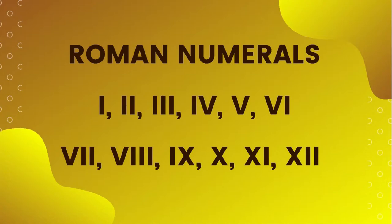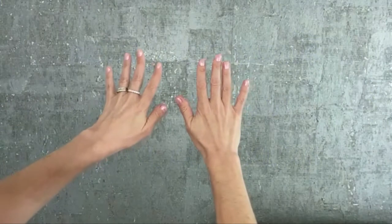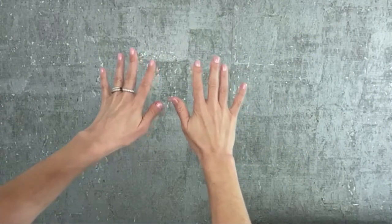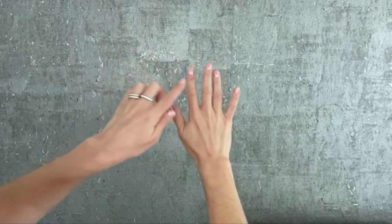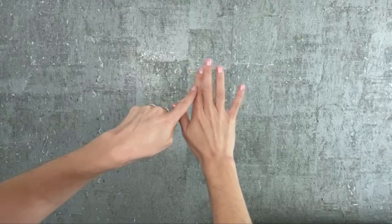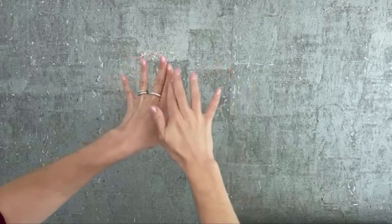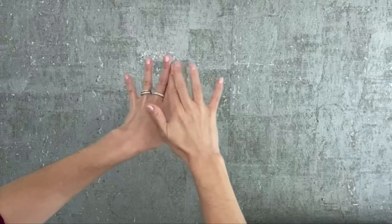Throughout the years, I noticed that the easiest way for students to remember the position of the cranial nerves is by using their hands. You position your hands like this, and in the hand that you will start counting, you put the middle finger on top of the index finger, and in the other hand, you put them right next to each other.